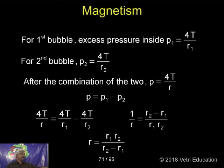Pressure is 4T/r, 4T/r1 for the first bubble. Therefore after the combination, the pressure 4T/r equals P1 minus P2, because r2 greater than r1.